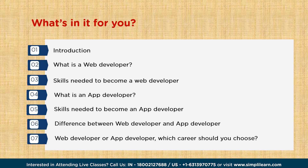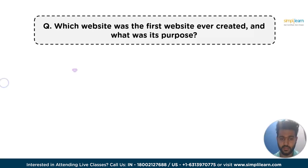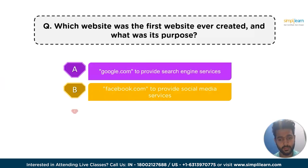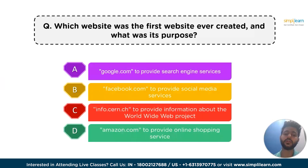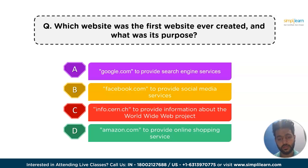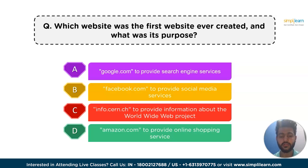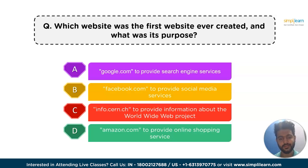But before we begin, let me ask you a quick question. Which website was the first website ever created and what was its purpose? Option A is google.com to provide search engine services. Option B is facebook.com to provide social media services. Option C is info.cern.ch to provide information about the worldwide web project. Option D is amazon.com to provide online shopping services. You can pause this video and answer in the comment section below.